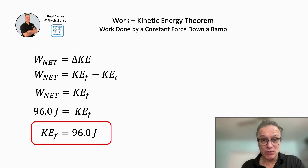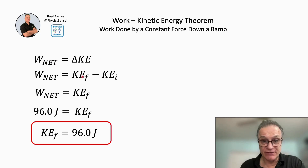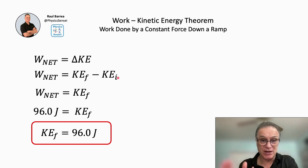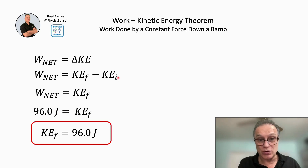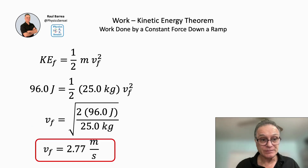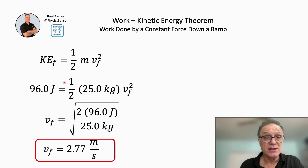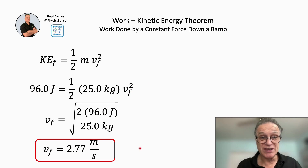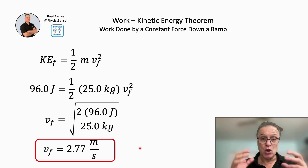Now that we have the net work of 96 joules, we can find the final kinetic energy. The net work equals the change in kinetic energy: W_net = KE_final − KE_initial. The crate starts at rest, so KE_initial = 0, meaning KE_final = 96 joules. By definition, KE = ½mv², so solving for the final velocity: v = √(2 × 96 / 25) = 2.77 meters per second. That answers all the questions from the beginning of the problem.